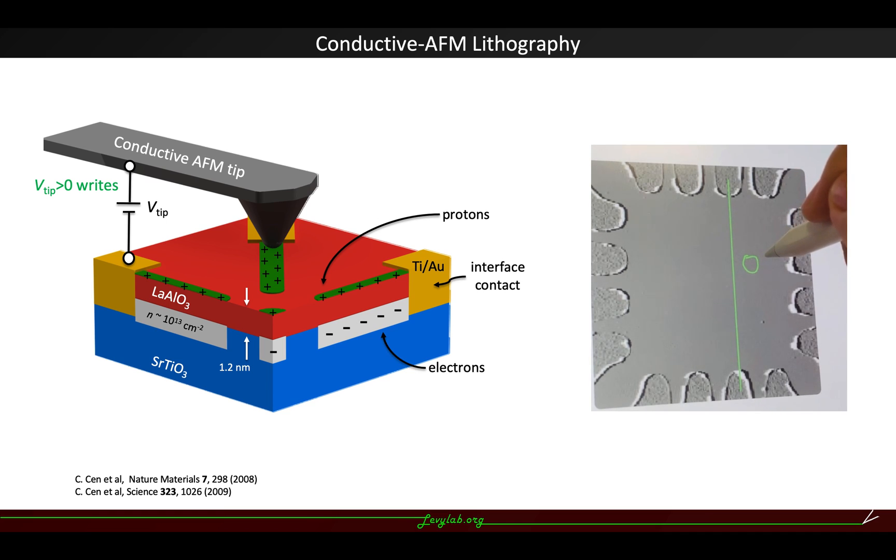it will leave a path of protons acting like a local top gate, tuning the interface below the path through metal insulator transition.